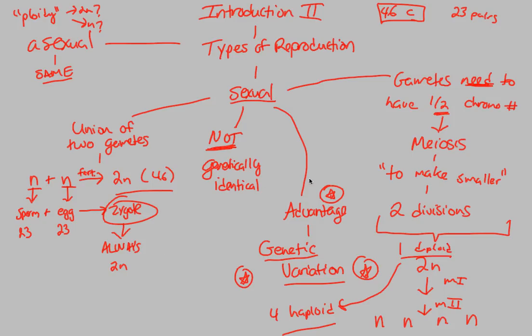Let's just understand now the difference. Asexual reproduction is all about sameness, creating the same from the same in the same environment. That overall was okay, but we have to understand that sexual reproduction is a huge advantage of genetic variation. We're going to see why as we move forward through meiosis.